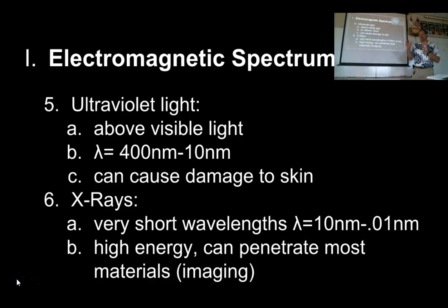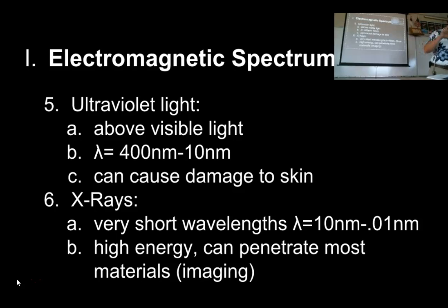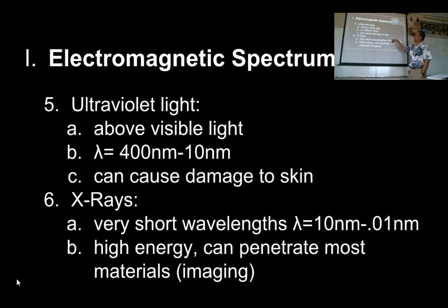Ultraviolet light is just above visible light — smaller wavelengths, ranging from 400 nanometers down to 10 nanometers, with very fast oscillations. This energy has enough power that it can cause damage to your skin. Sunscreen doesn't keep visible light off — you don't disappear — but it blocks ultraviolet light and reflects it off your skin. If your skin gets enough of this, that's how you get skin cancer and sunburns.